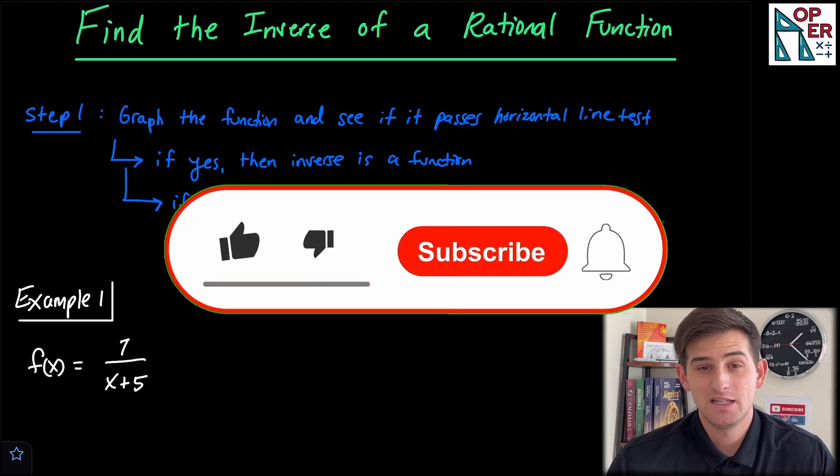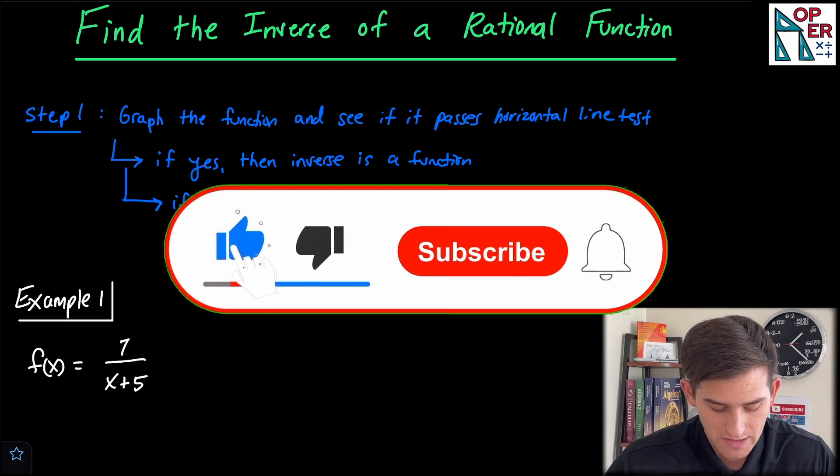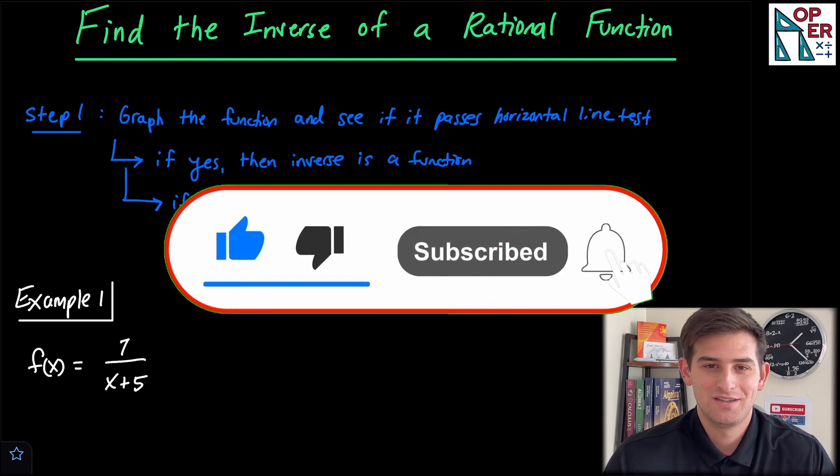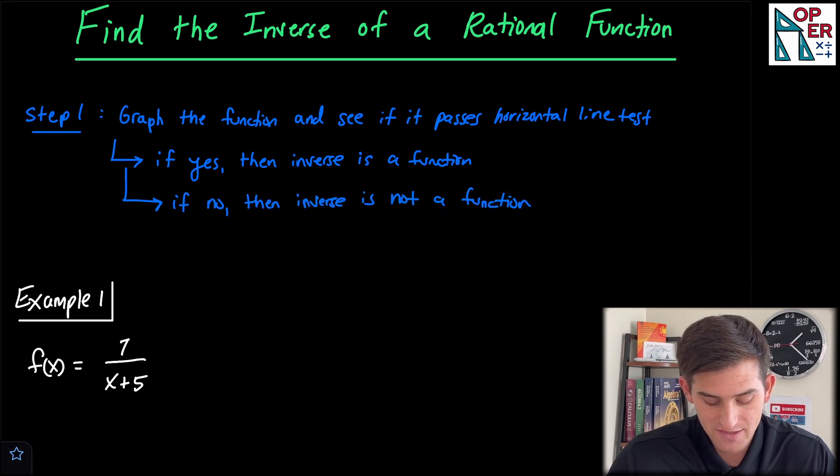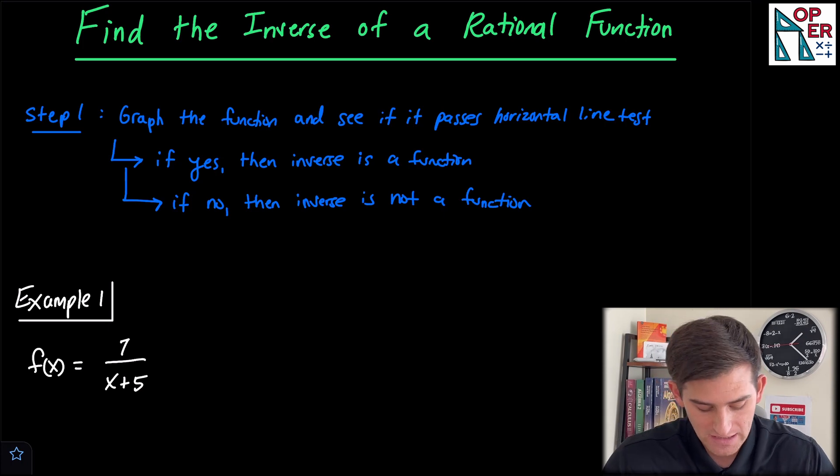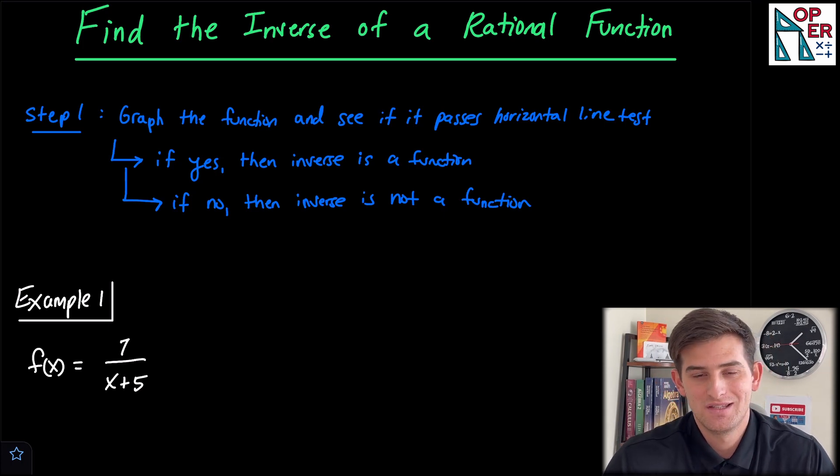In this video, we're going to talk about how we can find the inverse of a rational function. So step one, and really the only step, graph the function and see if it passes the horizontal line test. If yes, then the inverse is a function, and if no, then the inverse is not a function.